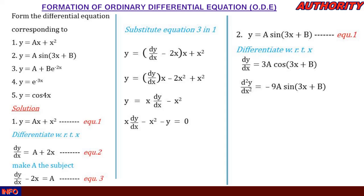Differentiating equation 2 a second time, d²y/dx² = −9a·sin(3x + b), because differentiating cos gives a negative. Call this equation 3. We can factor out −9: d²y/dx² = −9·[a·sin(3x + b)].